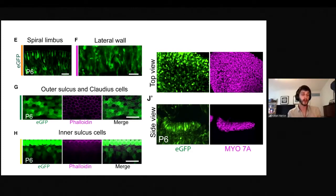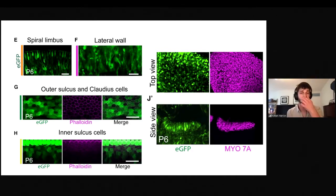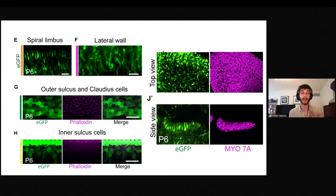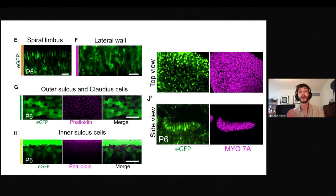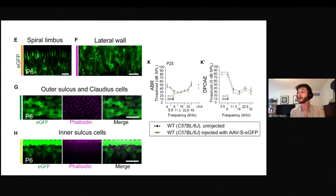It wasn't just hair cells that we targeted. We also got very good broad expression of multiple cell types throughout the organ of Corti and the cochlea, including the lateral wall, spiral limbus, Claudius cells, and sulcus cells. Many of these cell types, although they don't sense sound, are very important for upkeep of the ear and are implicated in deafnesses such as that relating to GJB2. We also saw very good transduction in vestibular hair cells of the utricle and saccule. We found no difference in hearing between treated and untreated mice, even at a relatively high dose of AAV.